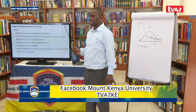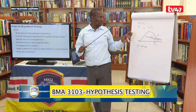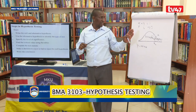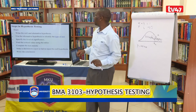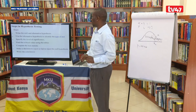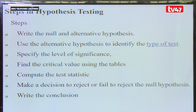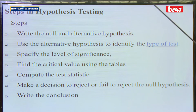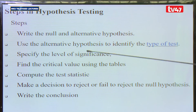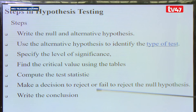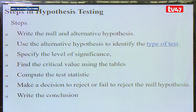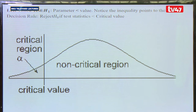Steps in hypothesis testing: First, indicate sample statistics and population parameters from the question. The first step is to state the null and alternative hypotheses. We use the alternative hypothesis to identify the type of test — left-tailed, right-tailed, or two-tailed. Then specify the level of significance, find the critical value from the tables, compute the test statistic, make a decision regarding whether to reject or fail to reject the null hypothesis, and write the conclusion reporting on the question addressed.